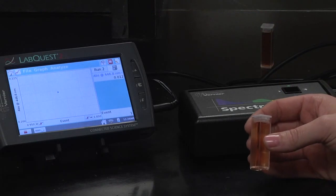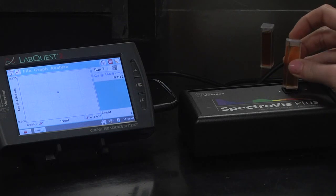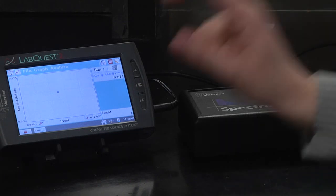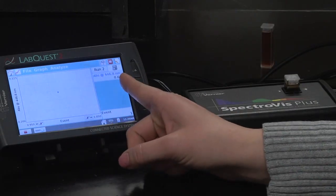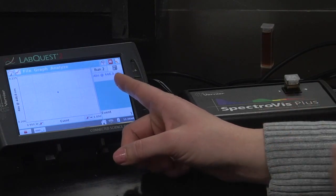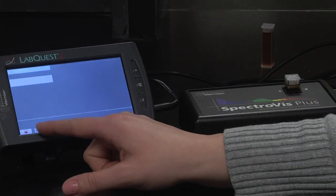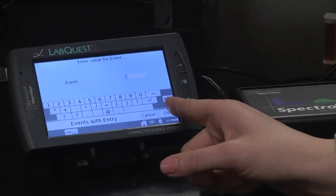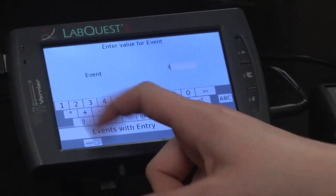Now that we have started our data collection, I made another cuvette for beaker number three. Notice how it changes from 0.9 to 0.6, and now I can press keep and it'll say beaker number three.